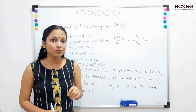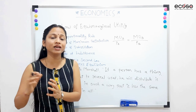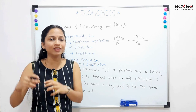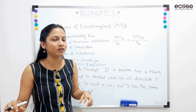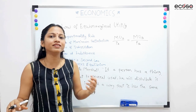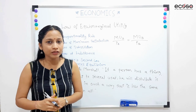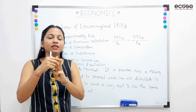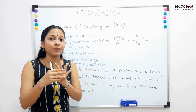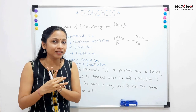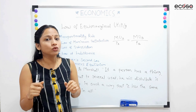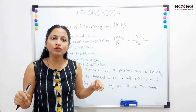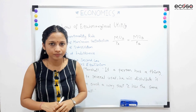Isi tarah se, jab bhi koi ghar ho ya aapke papa ki monthly income aati hai, salary aane ke baad, woh poori salary alag-alag use mein aise distribute karte hain ki jisse maximum satisfaction mile. Jisse kuch amount house rent hoga, light bill hai, then monthly grocery hai, aapka education expenditure hai, kuch savings rahegi — toh ye sab cheezon ke upar woh apni income is tarah distribute karte hain ki usse maximum satisfaction mile.